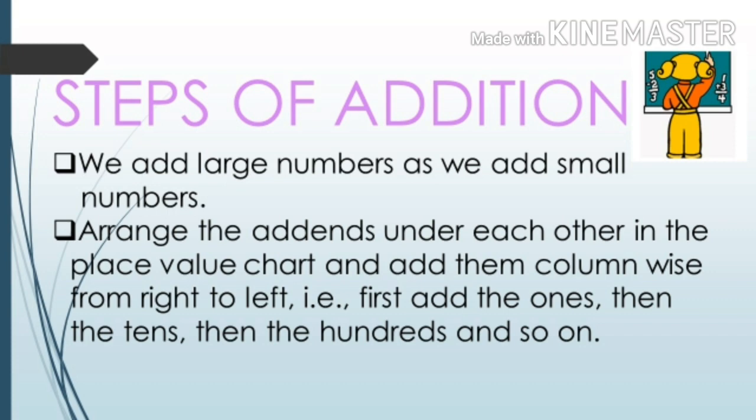Matlab yeh hua ki, first of all arrange the addends under each other in the place value chart. Now add them column wise from right to left. That is, first add the ones, then the tens, then the hundreds and so on.